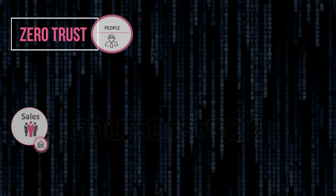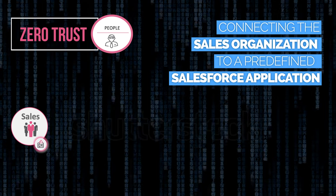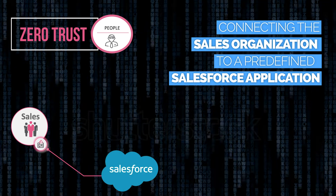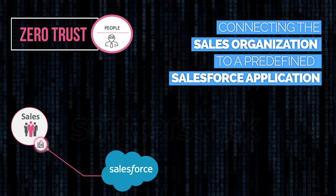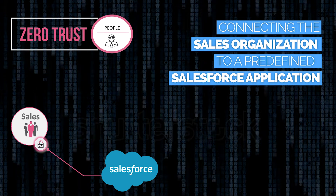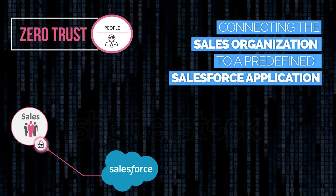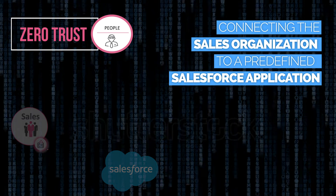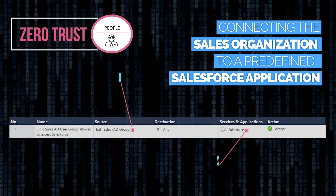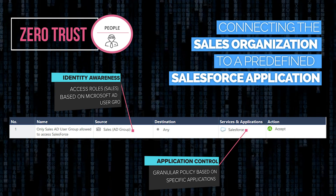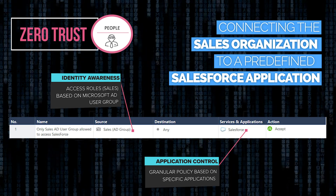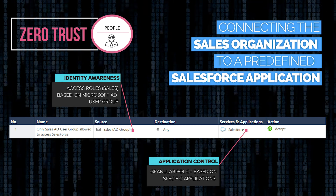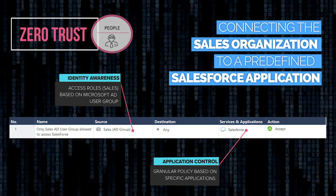Zero trust people is about enforcing a least privileged access policy. Here we create a user-based rule allowing only members of the sales organization to access the Salesforce application. An integration between Checkpoint Identity Awareness and Microsoft Active Directory enables us to define the sales group as an access role.